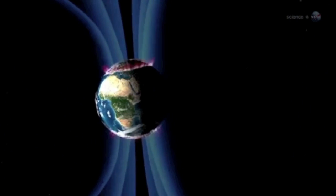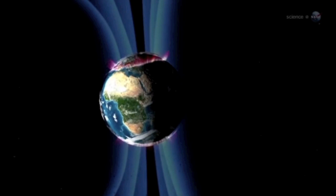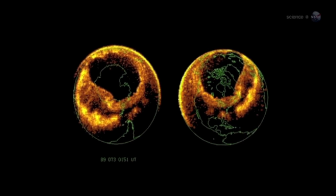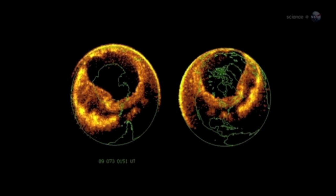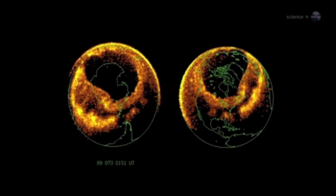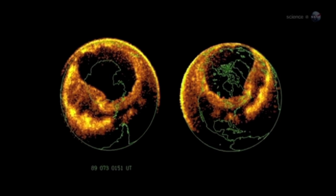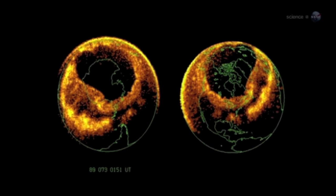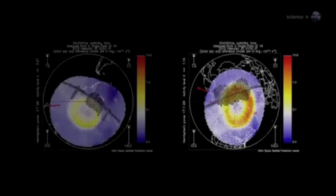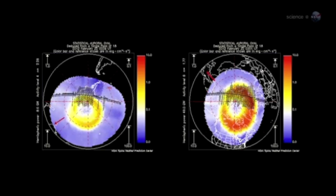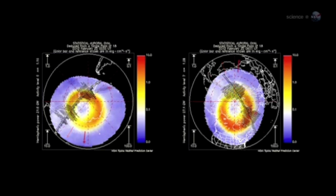The physics is akin to what happens in the picture tube of a color TV. Incoming particles are guided by Earth's magnetic field to a pair of donut-shaped regions called auroral ovals. There's one around the North Pole and one around the South. Sometimes when solar activity is high, the ovals expand and the space station orbits right through them.